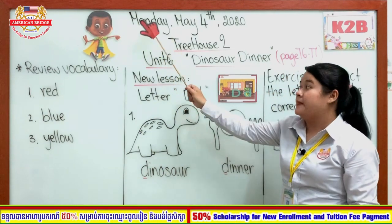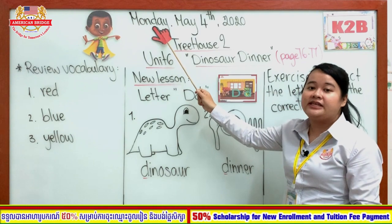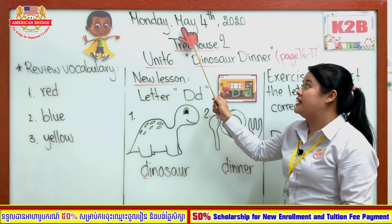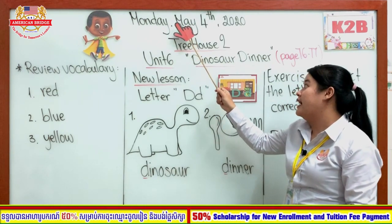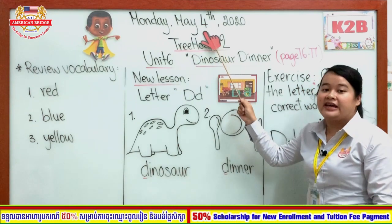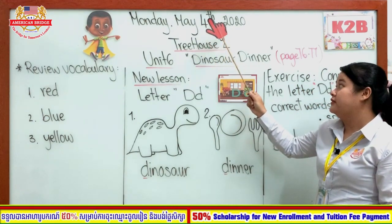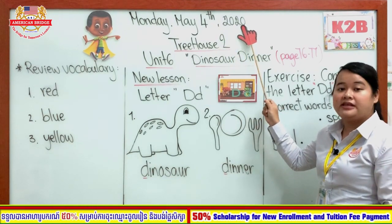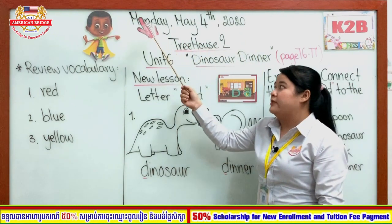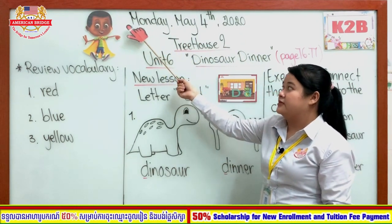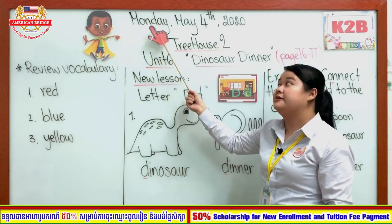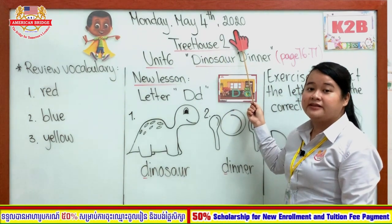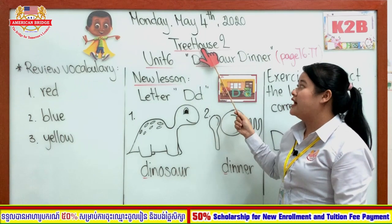Today is Monday — M-O-N-D-A-Y. How about the month? The month is May — M-A-Y. How about the date? The date is four. How about the year? The year is 2020. So right now let's repeat one more time all together: Monday, May four, 2020.